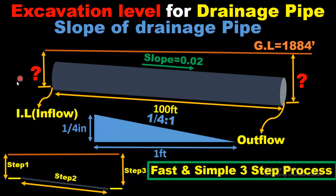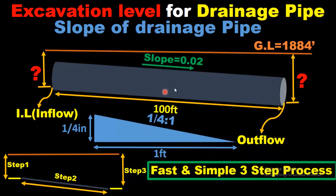In this video you can see this is the invert level, or inflow level, and this is the outflow level, and the total length of the pipe is 100 feet. We will follow just three simple steps, and at the end of this video you will be able to find the level of this pipe using this slope at any random distance. Please watch the complete video for better understanding. If you are new to my channel, please subscribe and press the bell icon to get video updates.